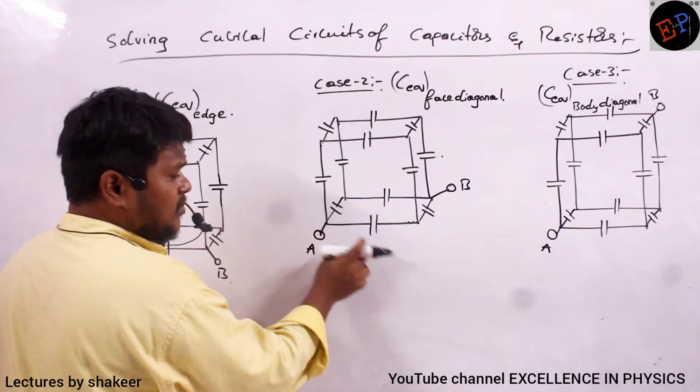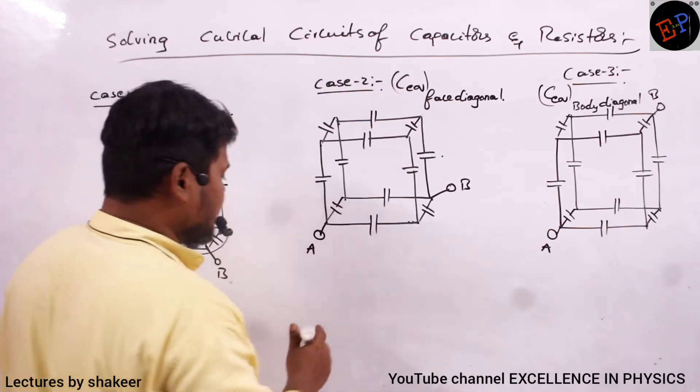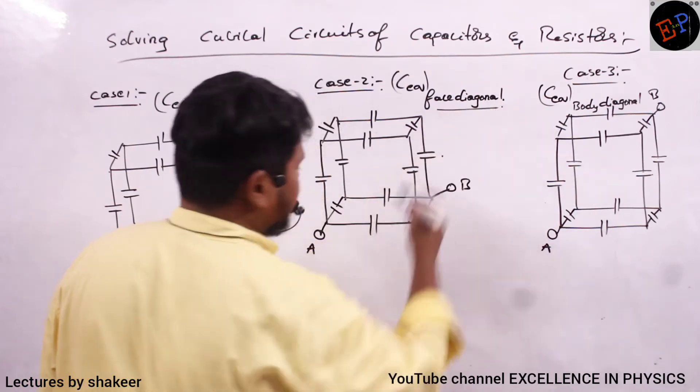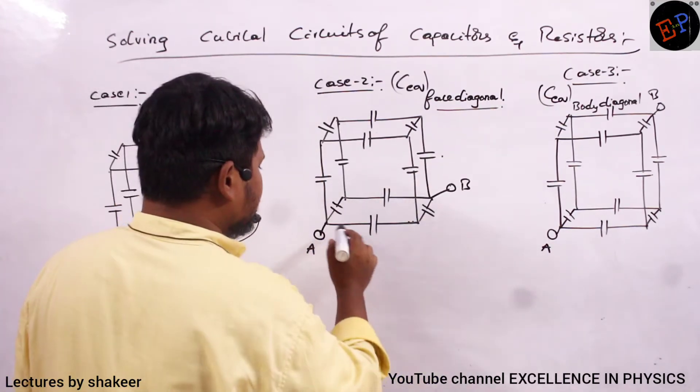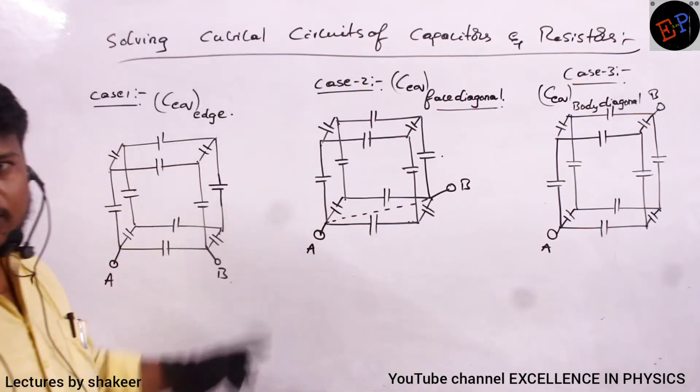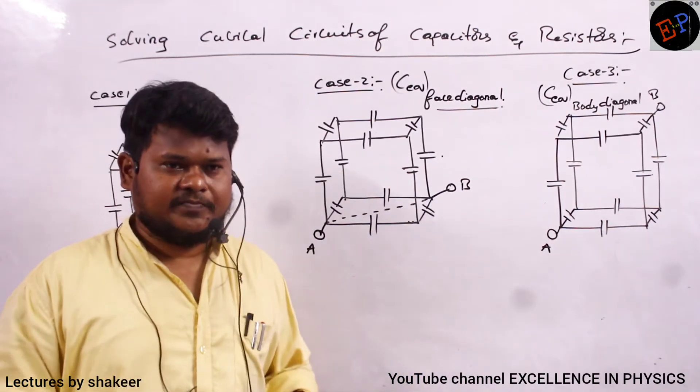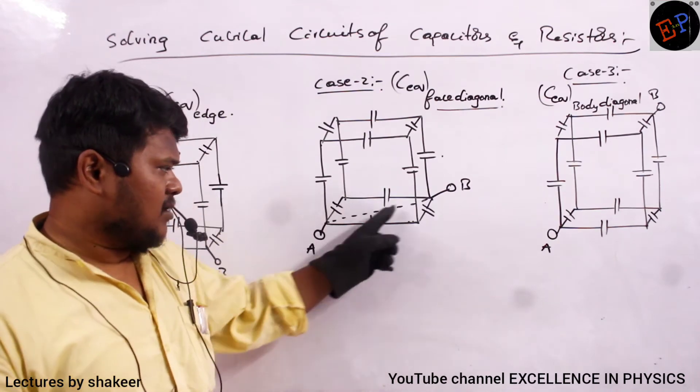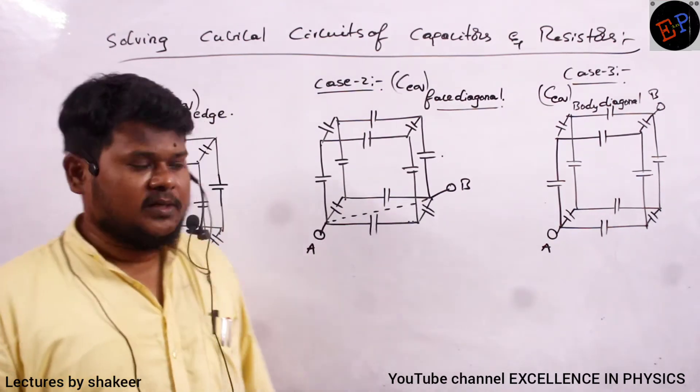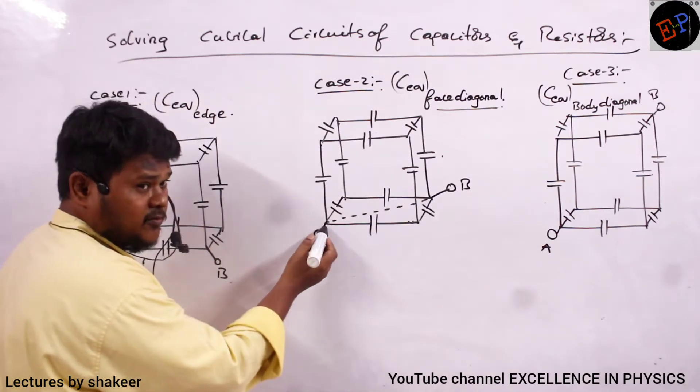Second one is, I am taking terminals on the body diagonal. What is meant by body diagonal, for example, not body diagonal ma, face diagonal. Face diagonal means, this is the face diagonal. This becomes the face diagonal. Cube has how many faces? Six faces. So, if I draw a diagonal on any face, that will become face diagonal.